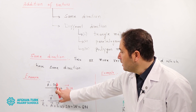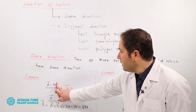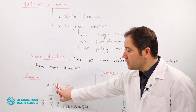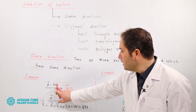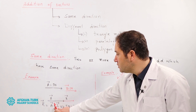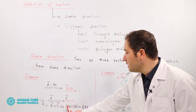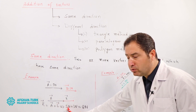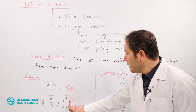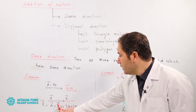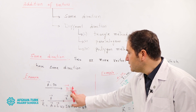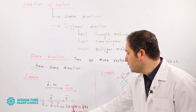If we use the magnitude of vector A and B, the magnitude of vector A is 5 Newton and vector B is 3 Newton.